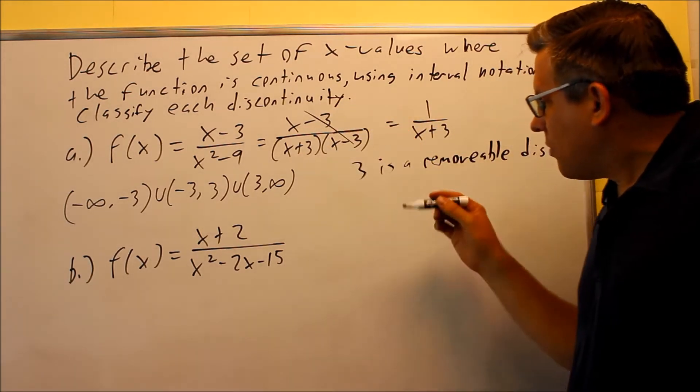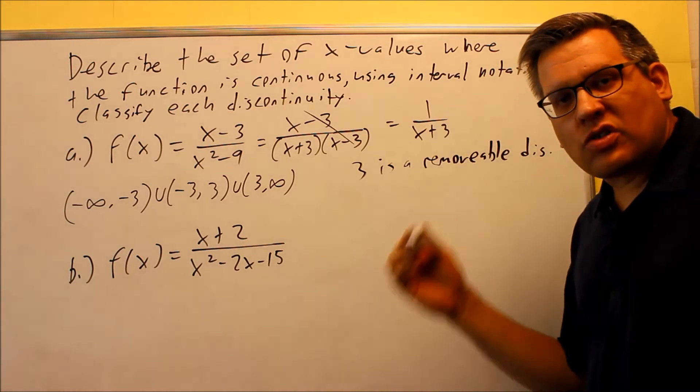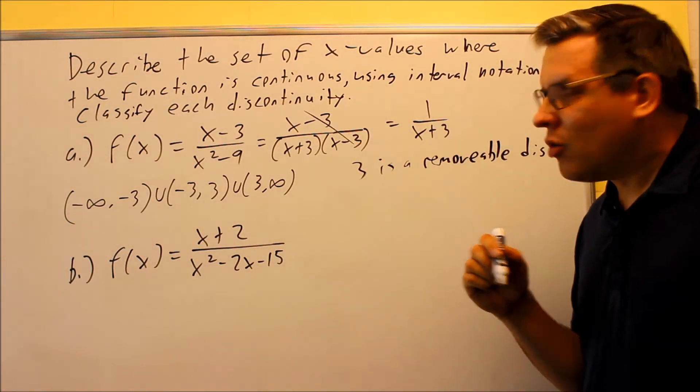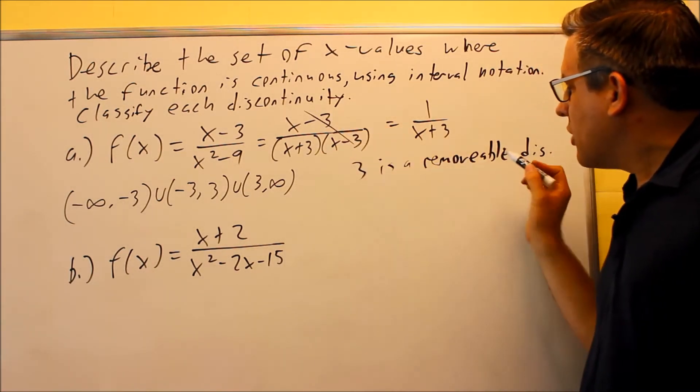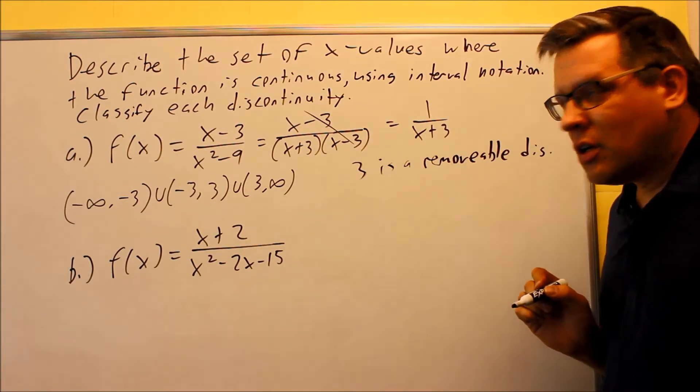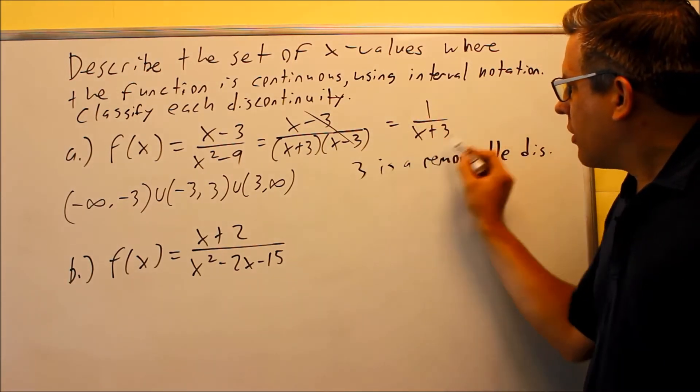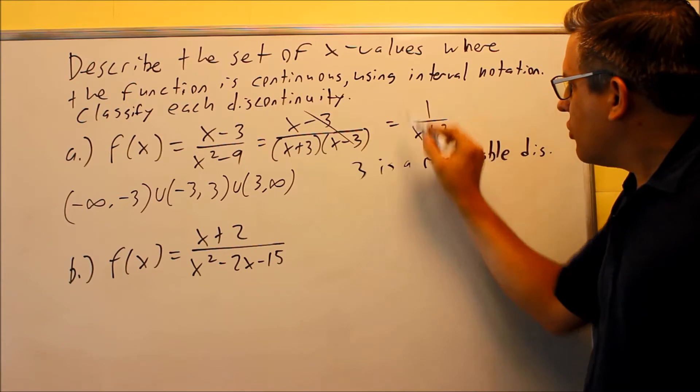So anywhere you have a hole, that's removable because you could assign an x value to plug up that hole. And so in that case, 3 is a removable discontinuity. Now, what you're left with here, after you cancel it out, is you end up with this.